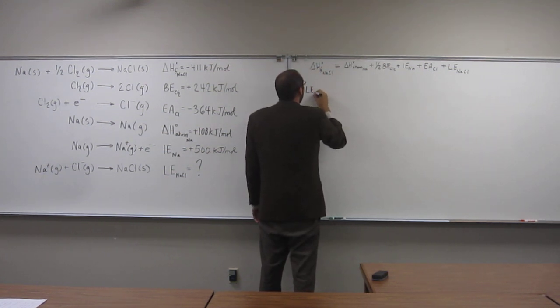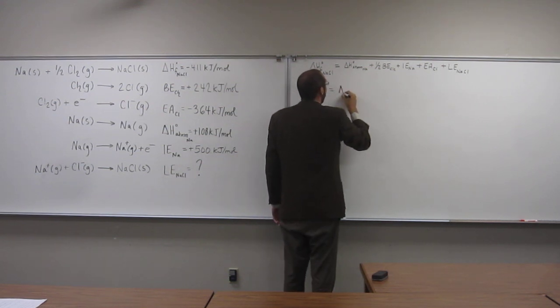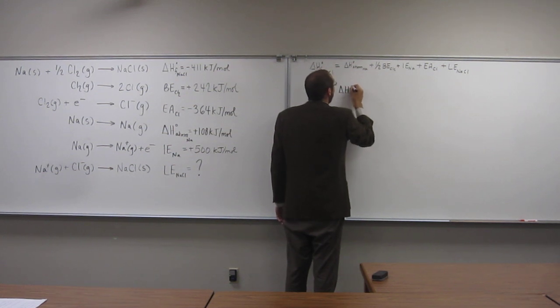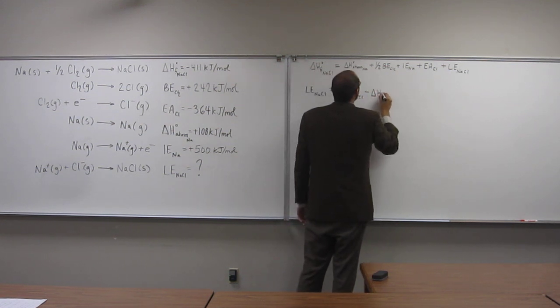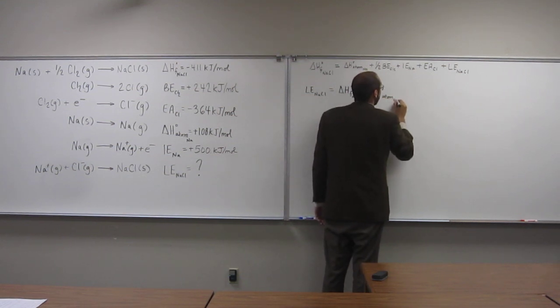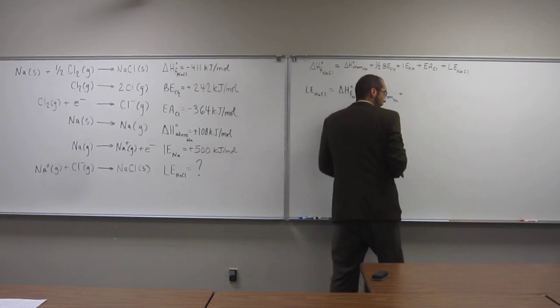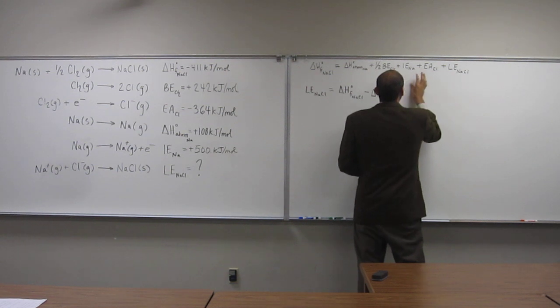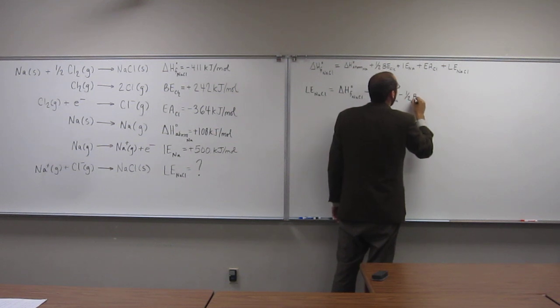the lattice energy of NaCl equals delta H of NaCl, minus delta H, the ionization energy of sodium, plus, sorry, minus, so we're moving this over to, minus the one-half bond energy of Cl2.